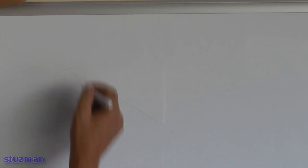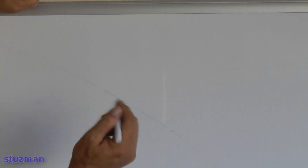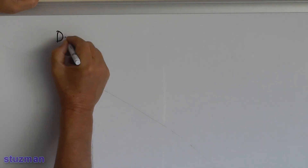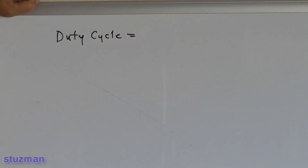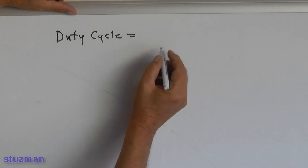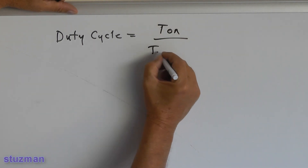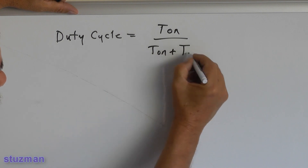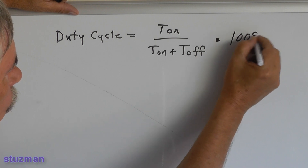Now let's put up what the equation is to calculate duty cycle and break it down — there's not really much to it. The duty cycle — you've heard that before; somebody will say it's 50% duty cycle, or 20%, or 80%, or whatever. The duty cycle is equal to the time on, divided by the time on plus the time off, times 100%.